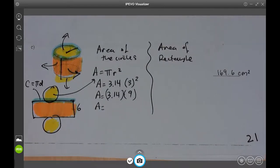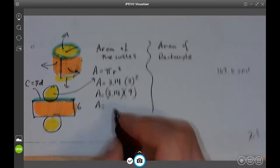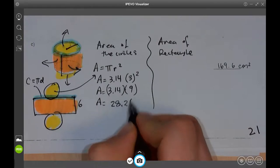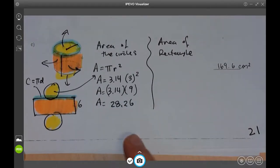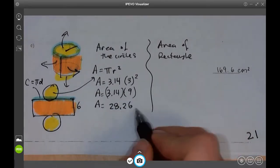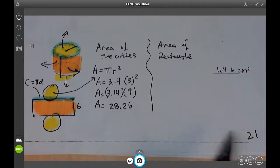I'm going to get 3.14 times 9. Carry all the digits here. 28.26. Keep them all. Write them all down. It's not too many. It doesn't repeat forever. It's just two more digits. So write them all down.